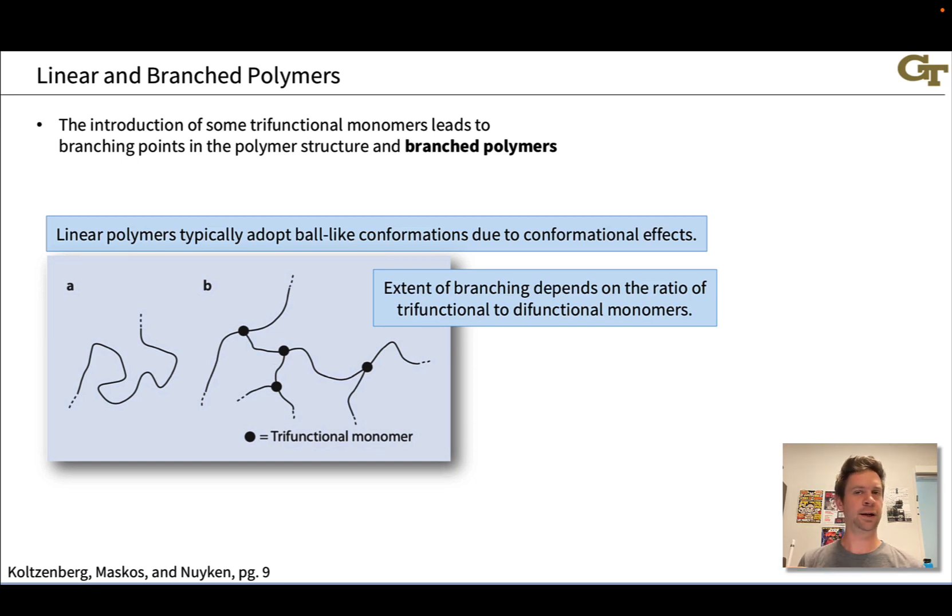The extent of branching depends on the ratio of trifunctional to difunctional monomers. The more branching points we put in there, the greater the extent of branching. The hypothetical limit here is a cross-linking situation where there's a ton of branching as a result of a very large number of bonds made between various polymer chains.